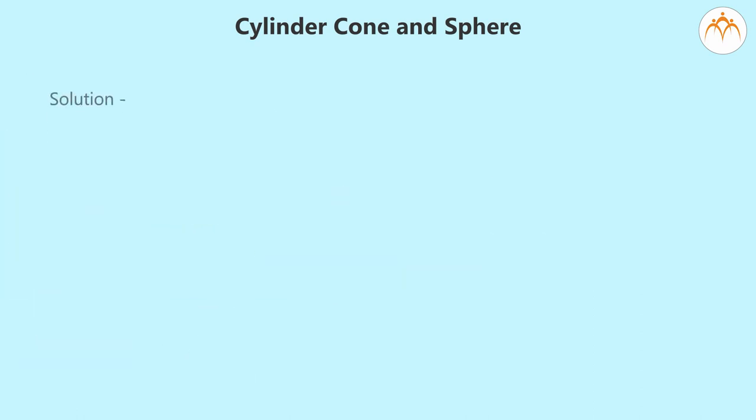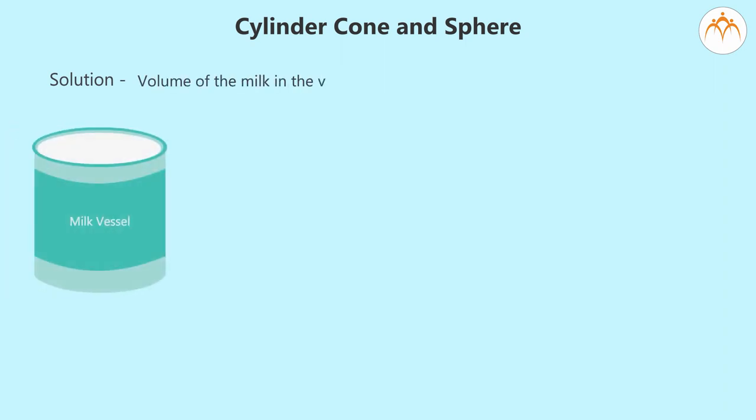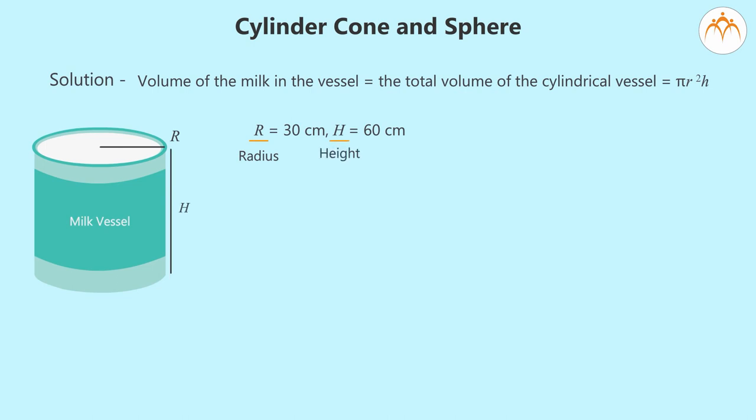Solution: The volume of the milk in the vessel equals the total volume of the cylindrical vessel, which equals πr²h, where r is 30 cm and h is 60 cm. Here, r is the radius of the cylindrical vessel and h is the height from the base, which equals π × 30 × 30 × 60.